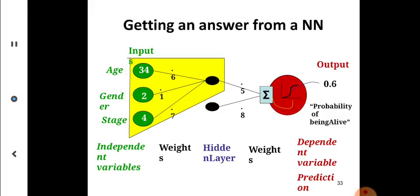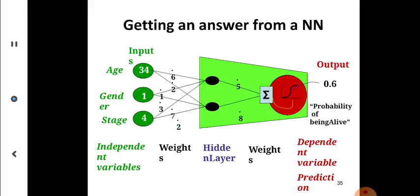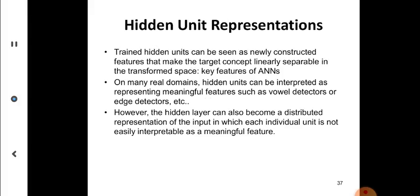Getting an answer from a neural network: you give inputs, apply them to the hidden layer, and generate an output. Comments on the training algorithm: no guarantee to converge to zero training error. In practice, convergence may not happen, can sometimes happen, sometimes not. Many epochs or iterations may be required. Hidden unit representation can be seen in trained hidden units, but the number of hidden layers is not predictable, not calculable. You have to do trial and error.